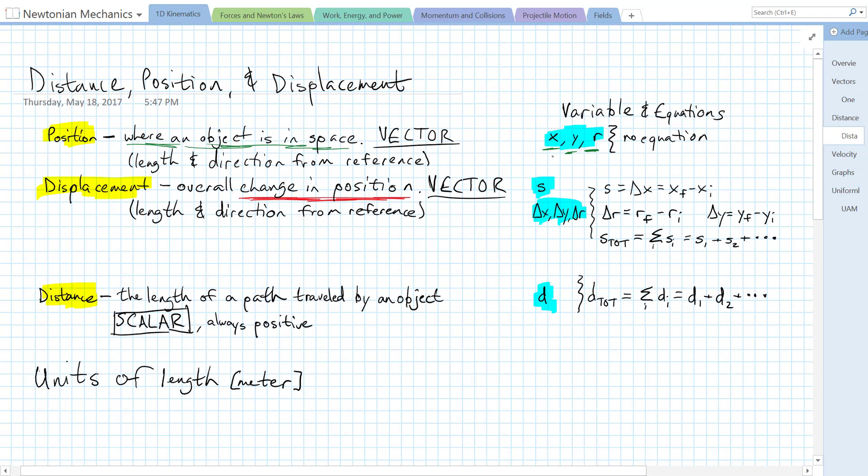The variable we're going to use for displacement is s. At least s is the variable in the IB, and it's often used in math. Some other common variables for displacement are delta x, delta y, or delta r.